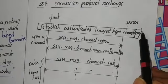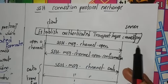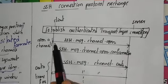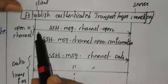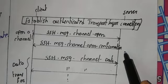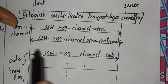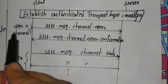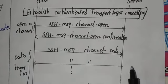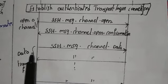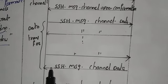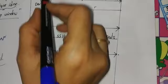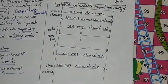For the SSH connection protocol exchange, the client and server first establish an authenticated transport layer connection. Initially, the client opens a channel by sending a channel open message to the server, and a confirmation message is transmitted from server to client. This is similar to a handshake — sending a request and receiving a response. After connection establishment, data is transmitted from client to server and server to client, and then the channel is closed.